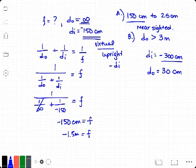The fact that this is negative tells us that it's going to be a concave lens rather than a convex lens. For part B, we have another person that can see beyond 3 meters, which means they are farsighted.